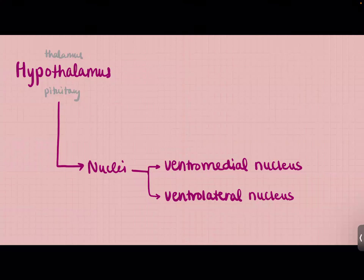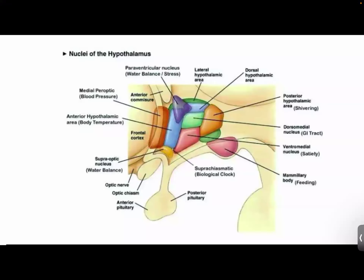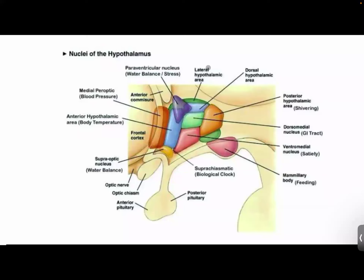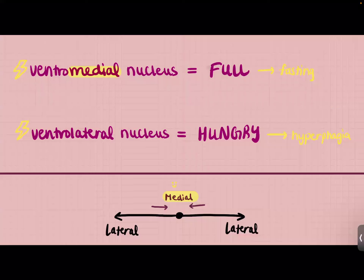The two nuclei we're going to be focusing on today are the ventrolateral and the ventromedial nuclei. This is a picture of the nuclei of the hypothalamus — they are collections of cell bodies that work together for a certain function. Right underneath the hypothalamus you'll find the pituitary gland, and above it you'll have the thalamus.